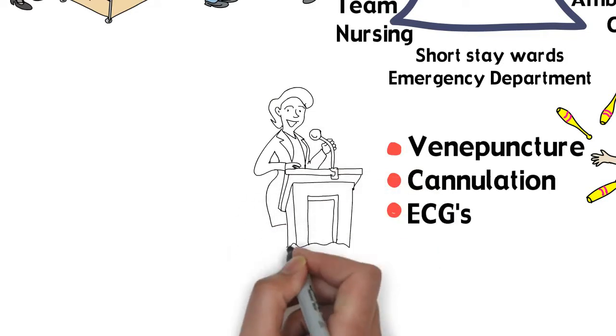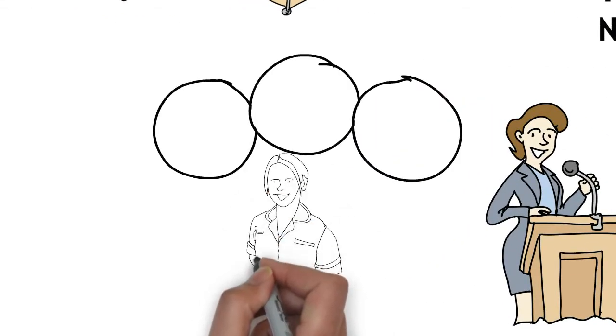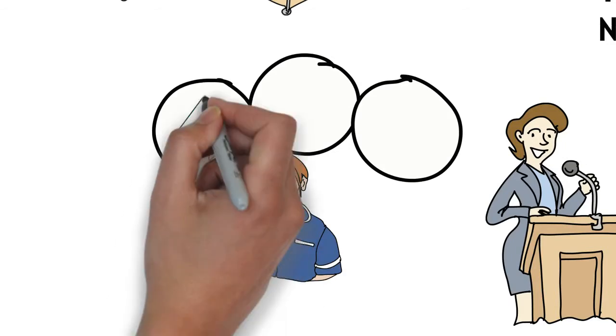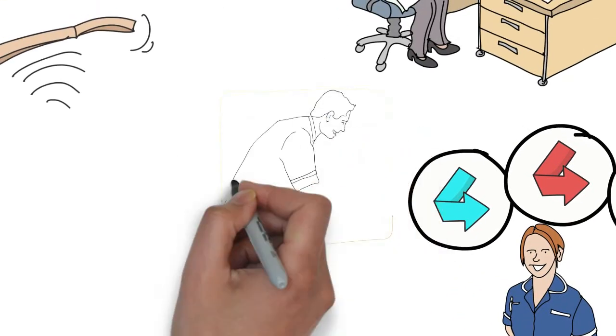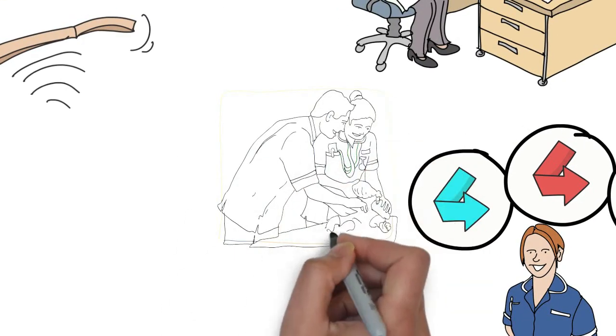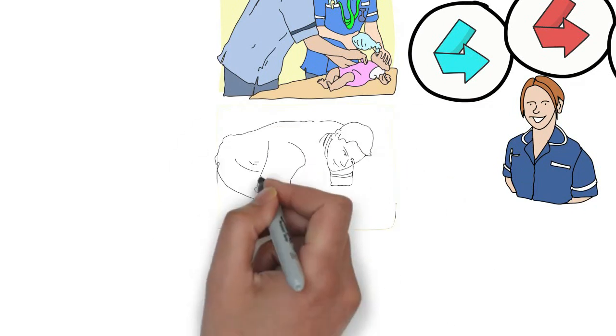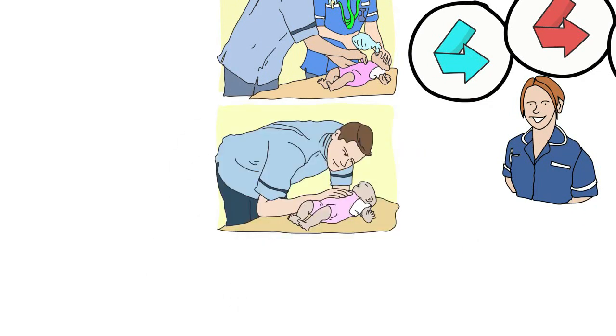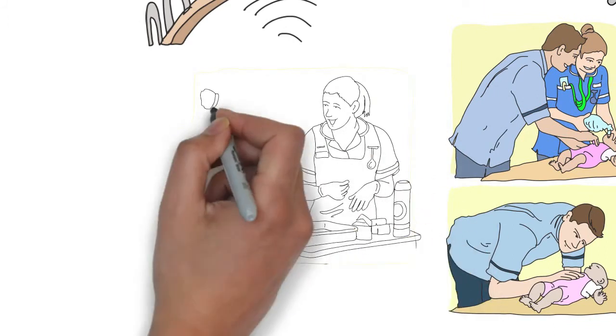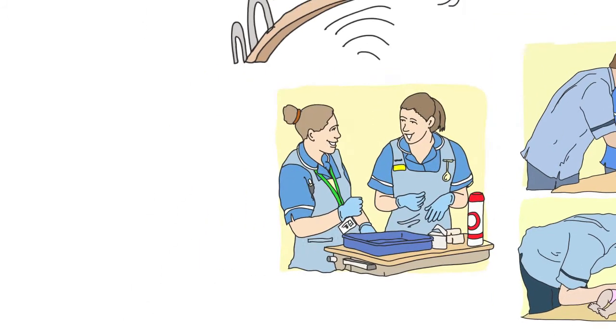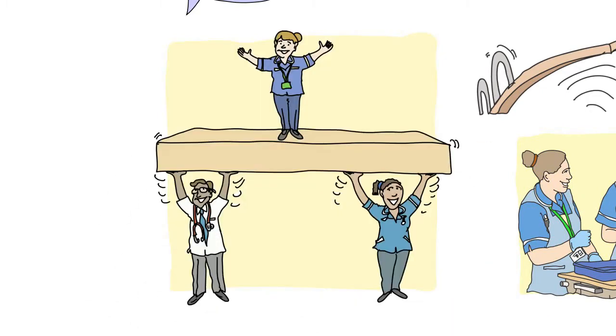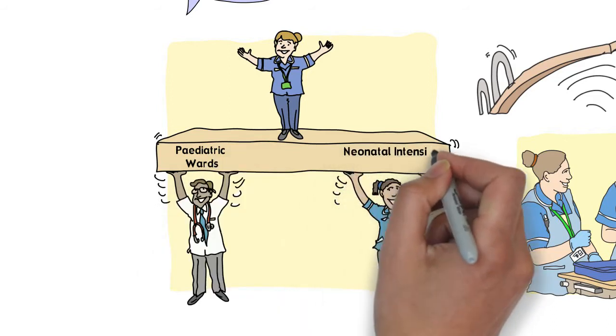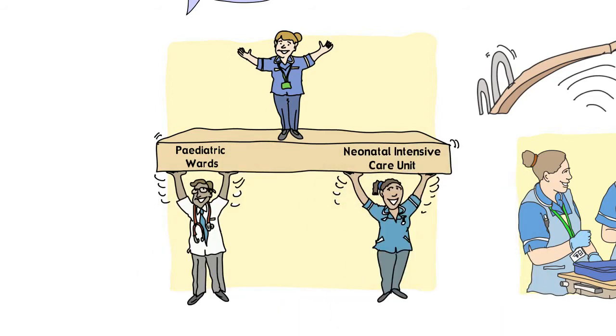Newly registered paediatric nurses are recruited automatically onto a rotation programme. For their preceptorship they were rotated to three clinical areas, including the Children's Emergency Department, the Children's Surgical and Medical Area, HDU and the Neonatal Intensive Care Unit. Newly qualified nurses are supported by the Professional Development Advisor covering all the paediatric wards, and the Professional Development Facilitator covering the specialist area of the Neonatal Intensive Care Unit. After the year's rotation you will be allocated to a specific area.